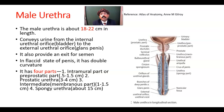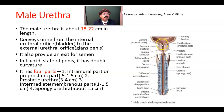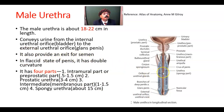The male urethra is about 18 to 22 centimeters in length. It conveys urine from the internal urethral orifice, located at the base of the bladder, to the tip of the glans penis — the navicular fossa — which is the external urethral orifice.